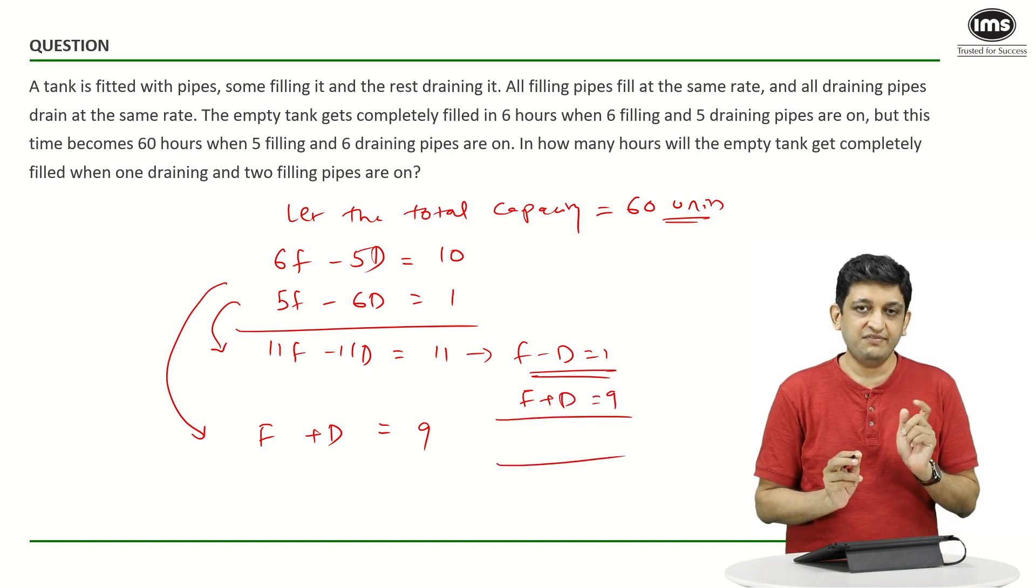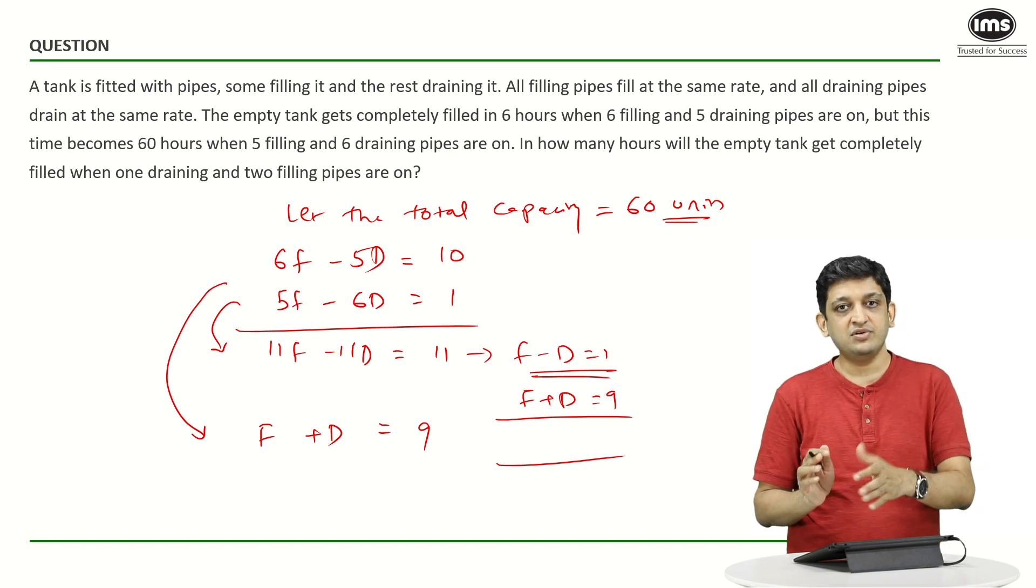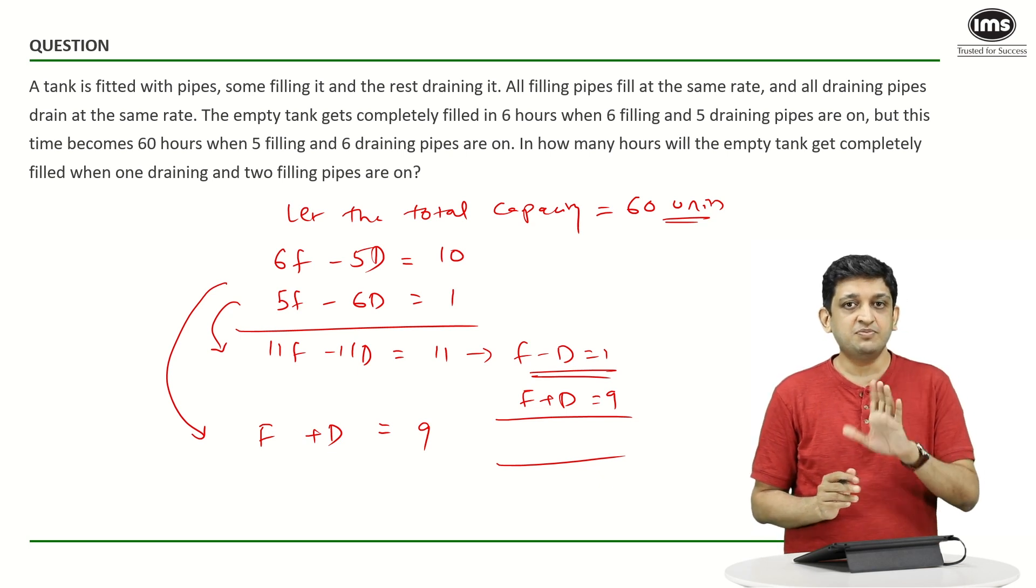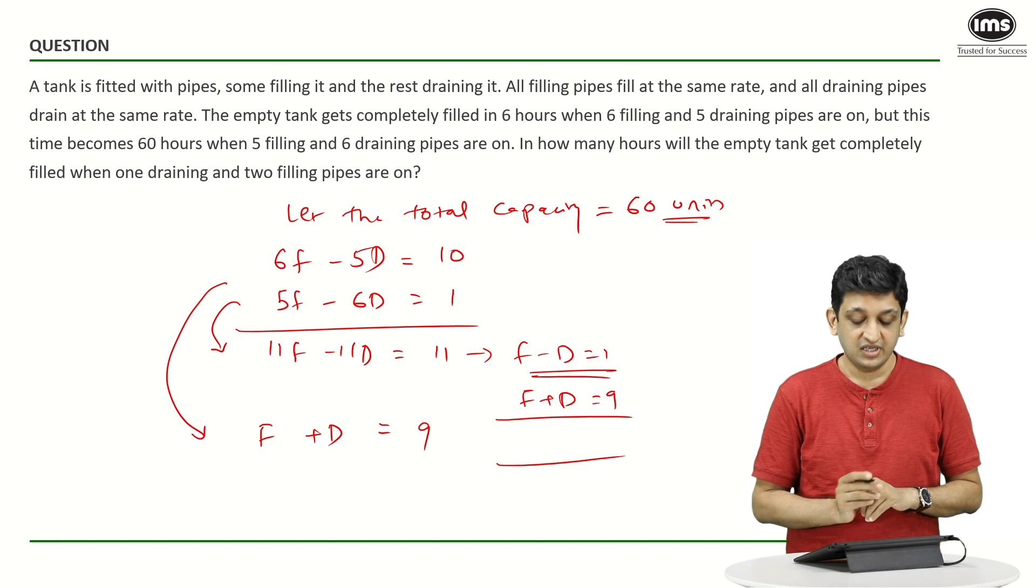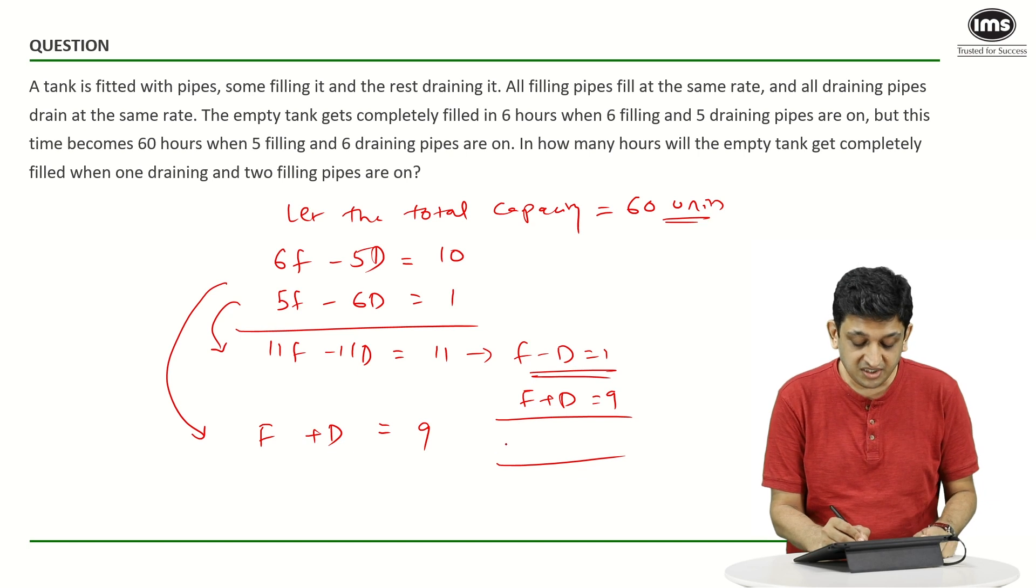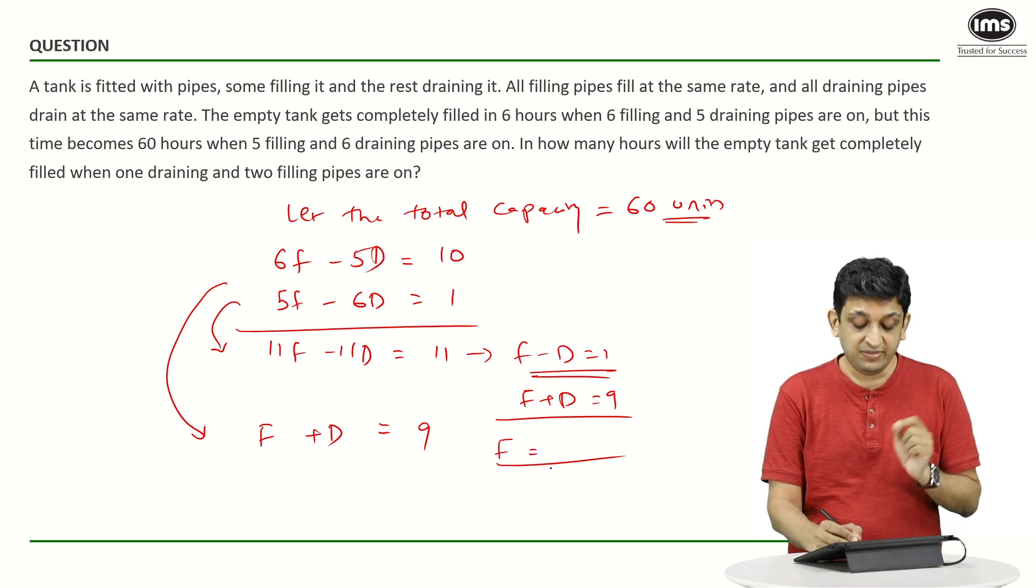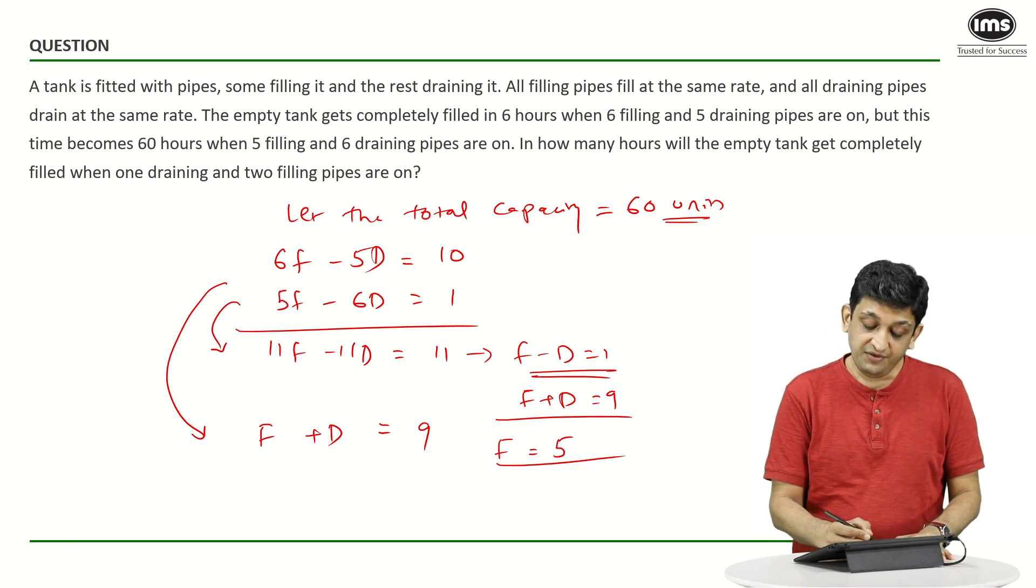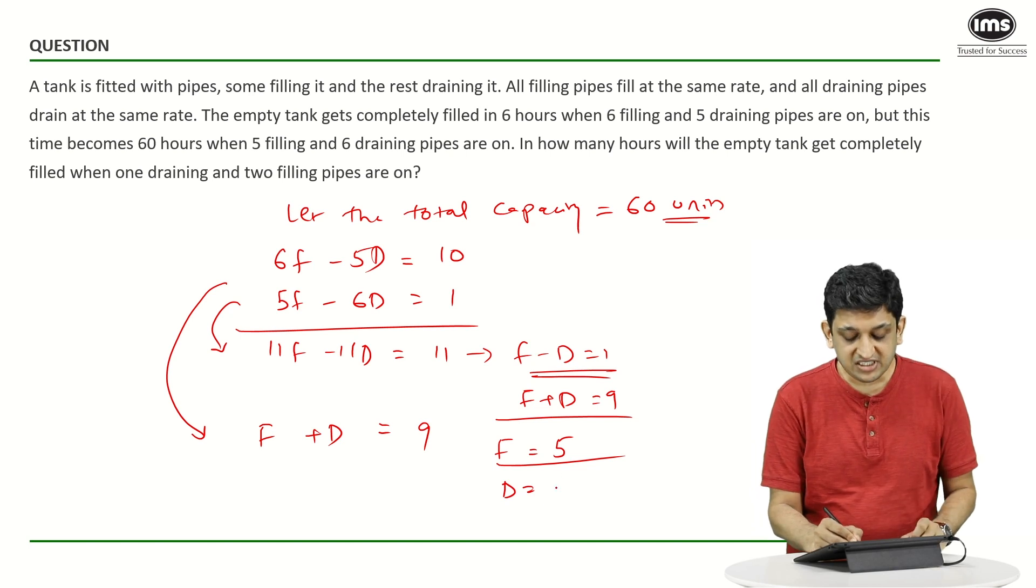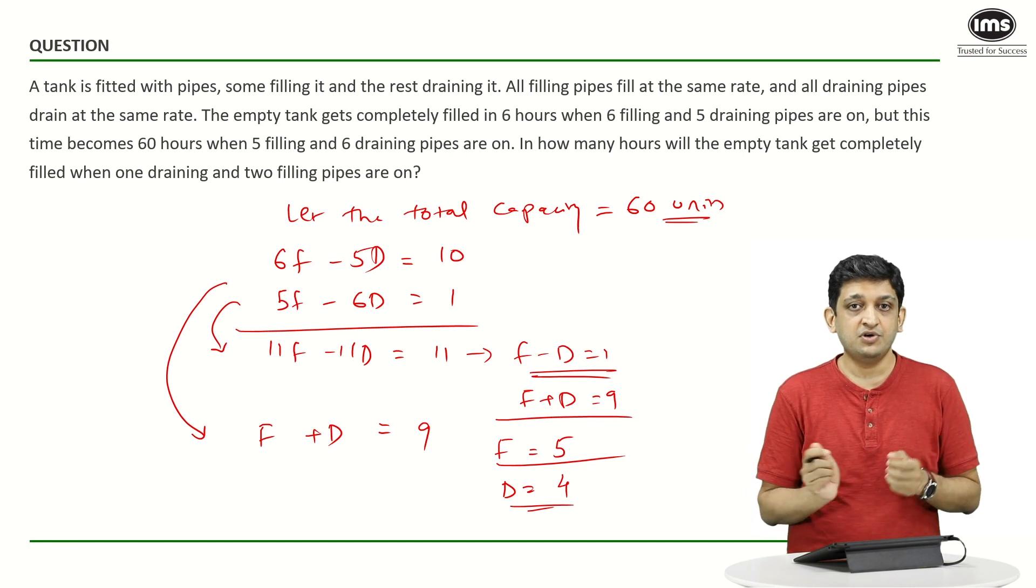Now, again, there is a small shortcut that we can use in these kind of scenarios. Whenever you have F plus D equal to 9 and F minus D equal to 1, the larger term is always going to be the arithmetic mean of the two numbers that you have. So, in this case, the larger term is F because F minus D is 1. F is going to be equal to the average of 1 and 9. So, 1 plus 9 by 2 or 5 will be F. If you look at D, you are going to get D equals 4 by just plugging the value of F in the first expression. So, we are going to get F equal to 5, D equal to 4.